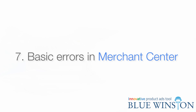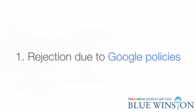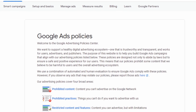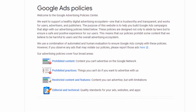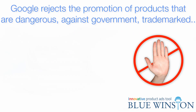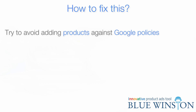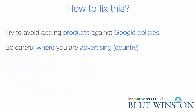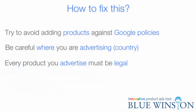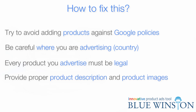We will sum up 7 basic errors that can occur in your Merchant Center account. The first is rejection due to Google policies. Google has a restricted product policy that can easily cause trouble with your ads. For example, Google automatically rejects the promotion of products that are dangerous, restricted by the country's government, trademarked and more — such as ammunition, switchblades or firecrackers. To fix this, avoid adding products to Google Merchant Center that violate Google policies. Keep in mind where you are advertising, ensure every product is legal, and do not fail to provide proper product descriptions and product images, as that again leads to a policy violation.